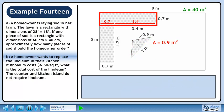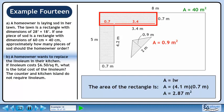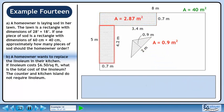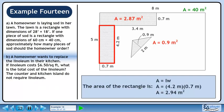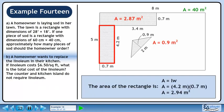Now we'll find the area of the counter shown by the rectangle. The area of the rectangle is 2.87 square meters. Now we'll find the area for the remainder of the counter. The area is 2.94 square meters.